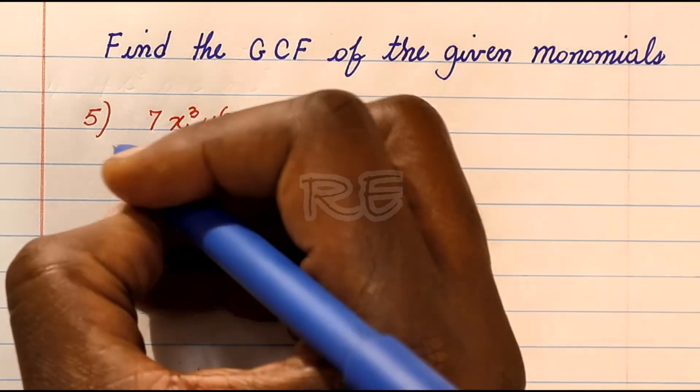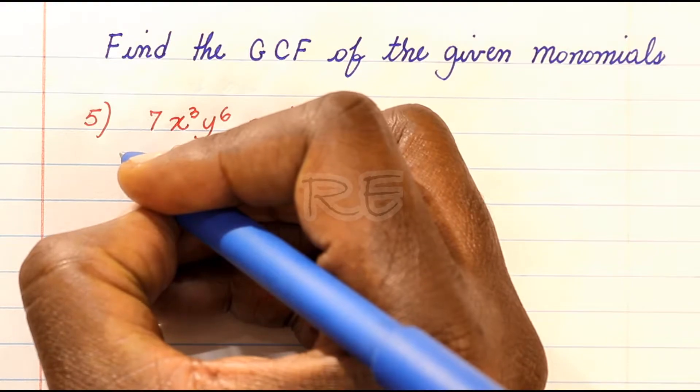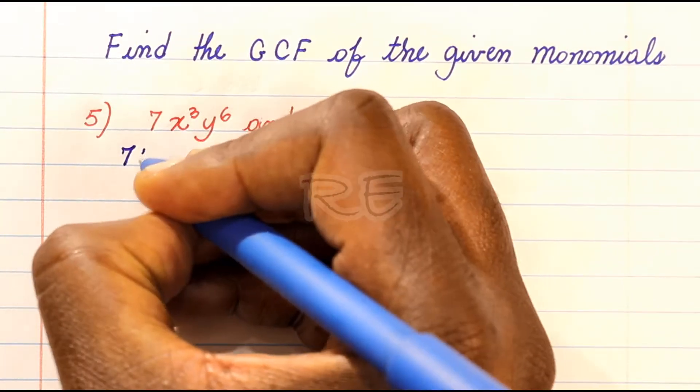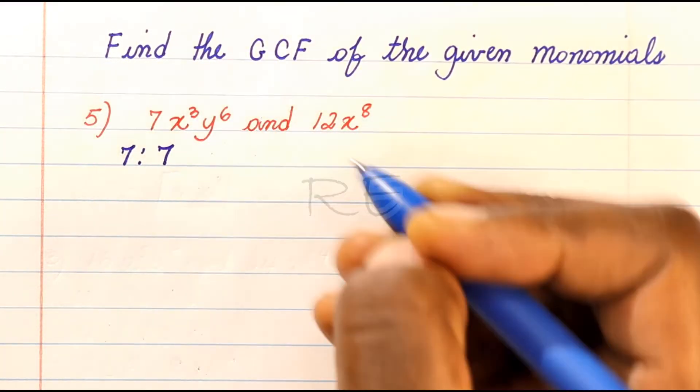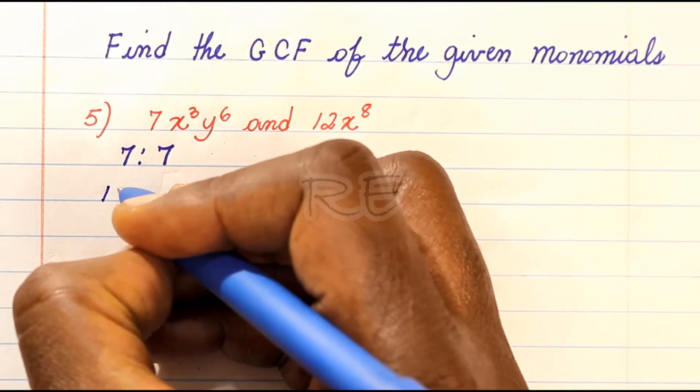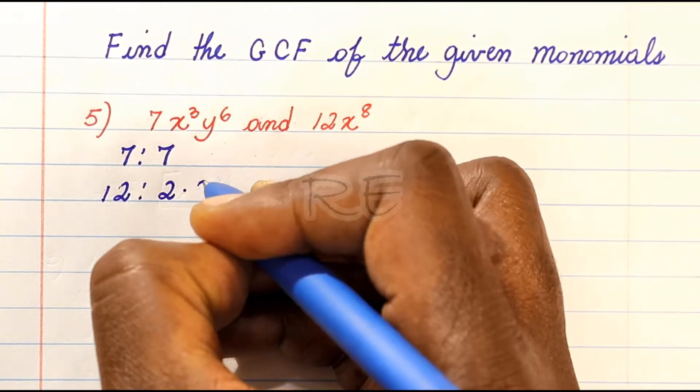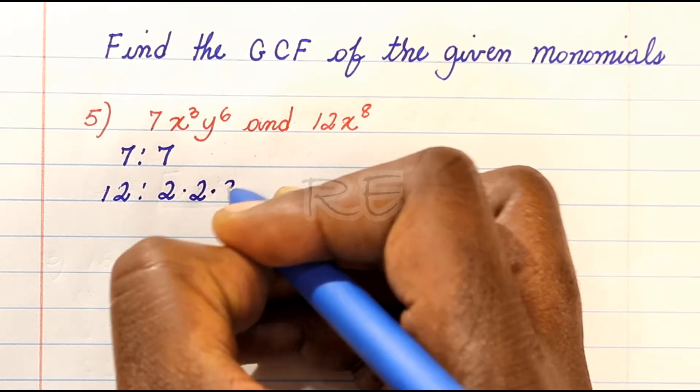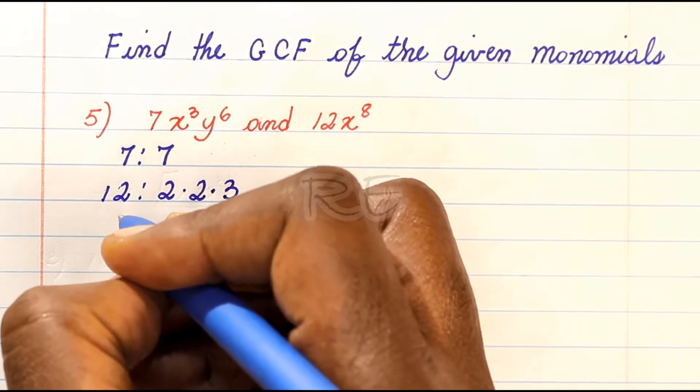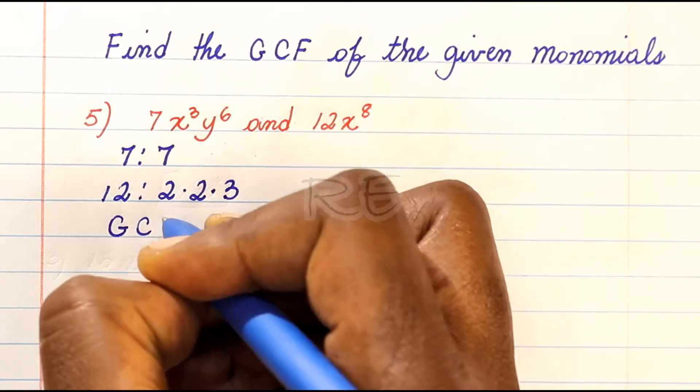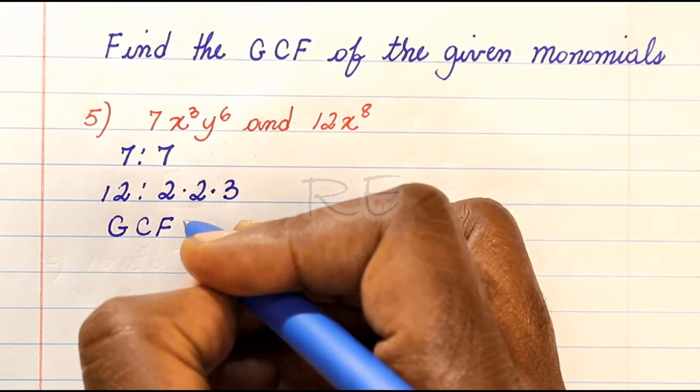For number 5, we have 7, which is prime. 12 is 2 times 2 times 3. They don't share anything, so the GCF is 1.